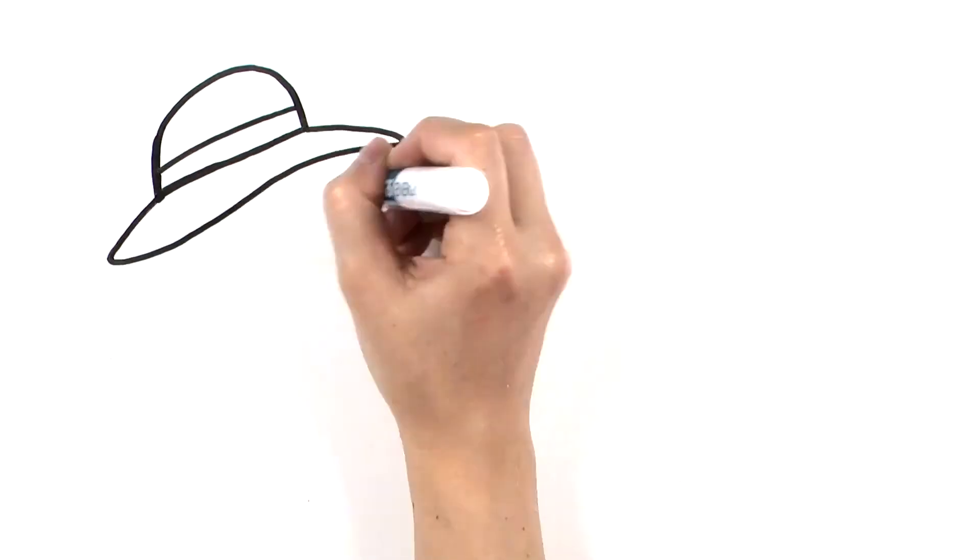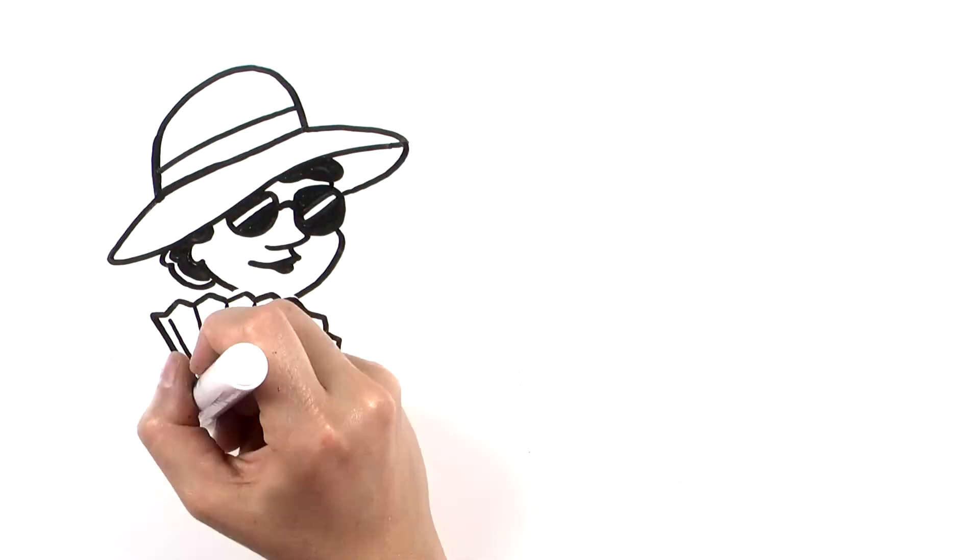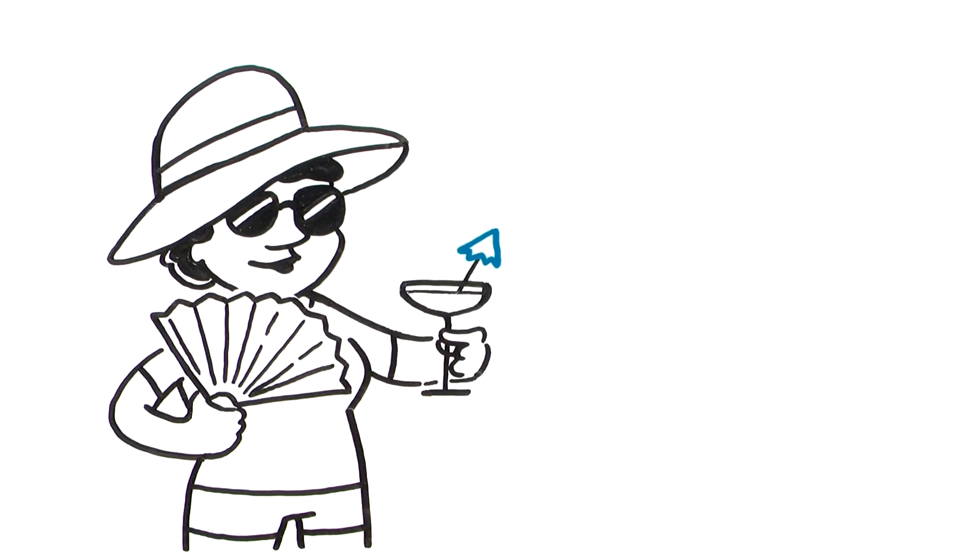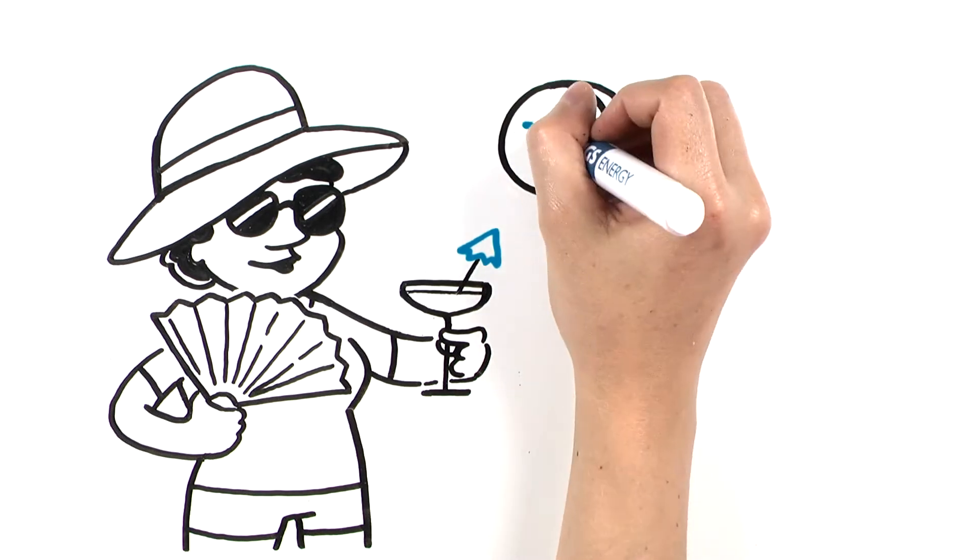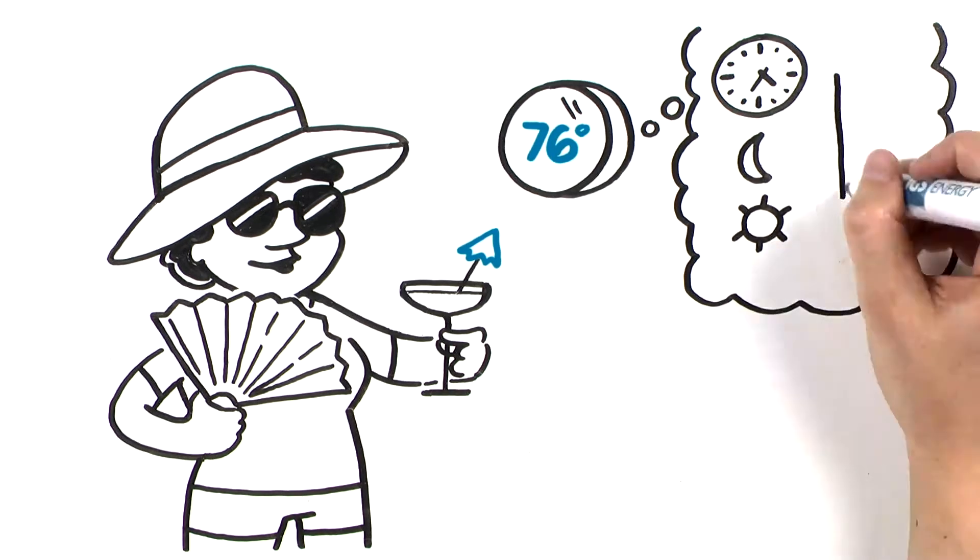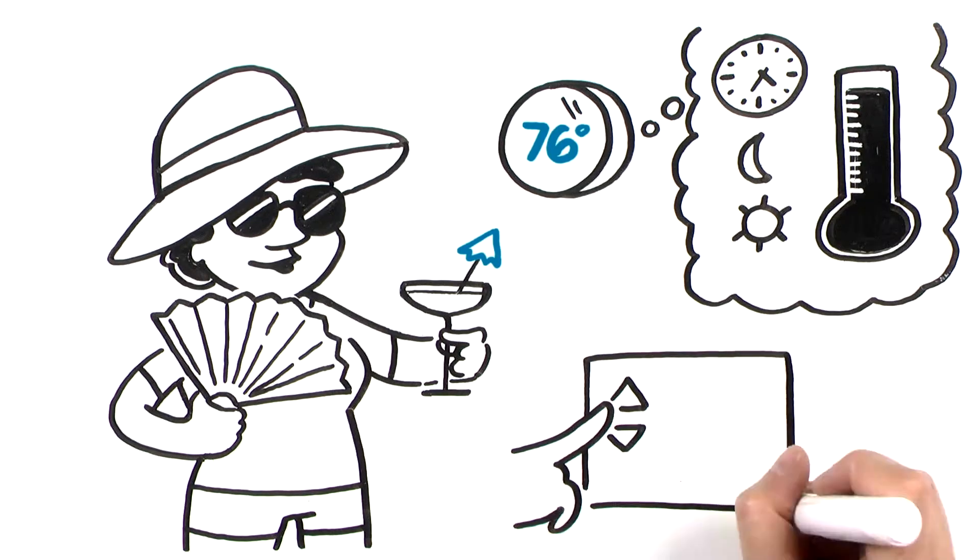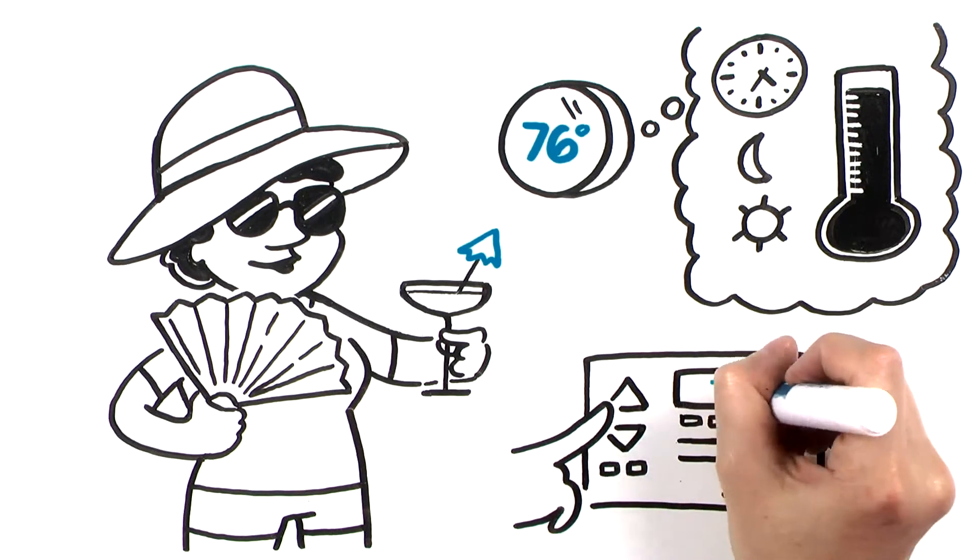But there are some simple ways to control your costs during those scorching hot summer days. You can affect your usage and costs by getting a smart thermostat that will learn your schedule and temperature preferences, or just set the temperature higher or even off when you don't need to use it for a while.